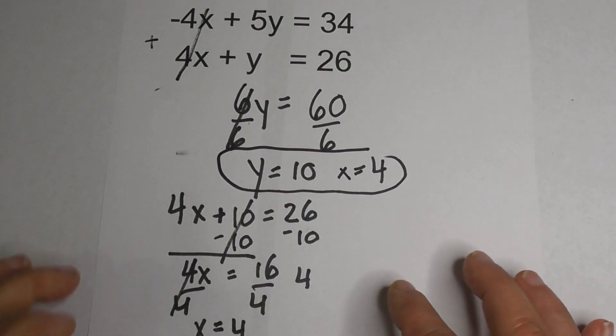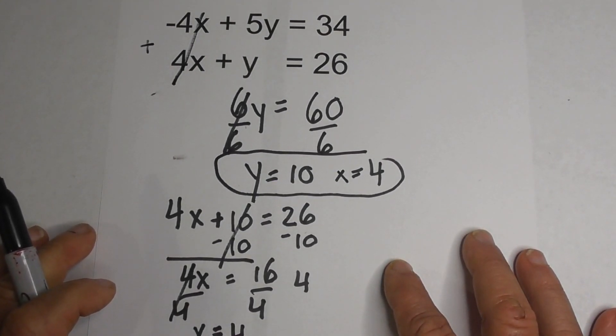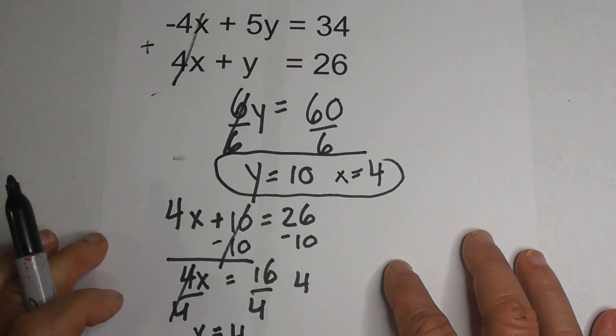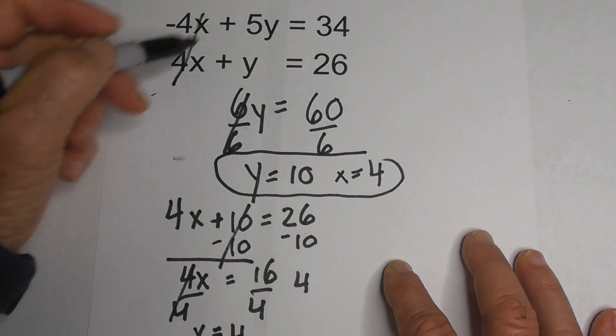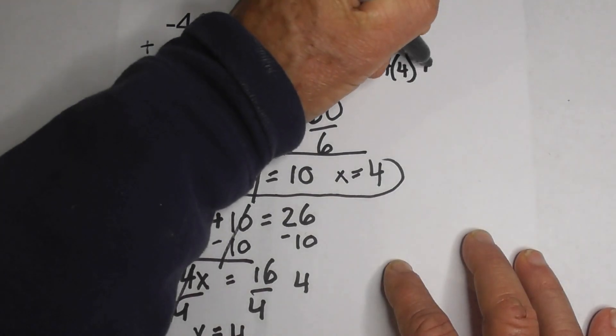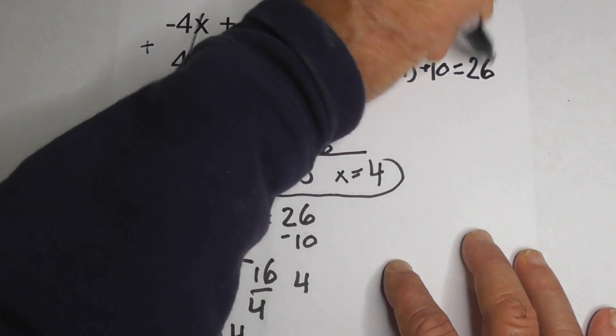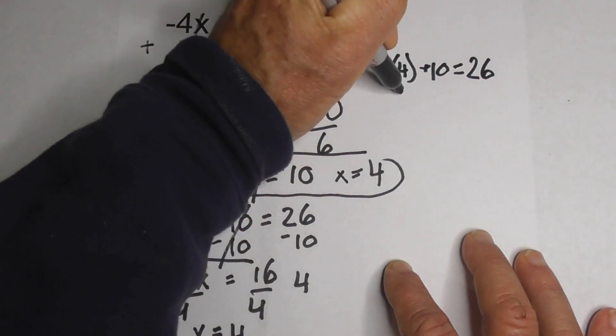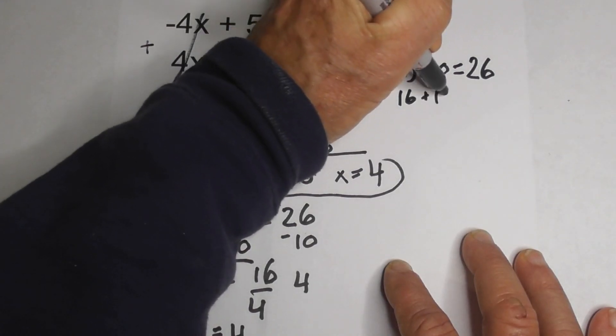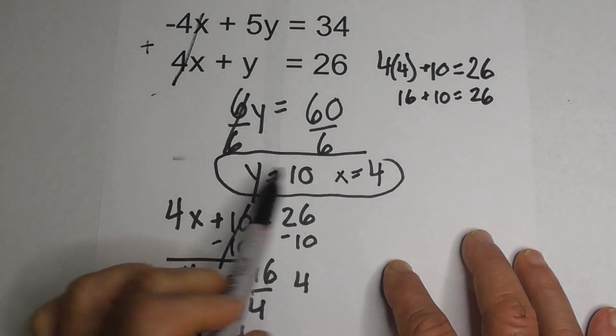Now what we can do is go ahead and plug this in to one of the equations and see if it adds up. So I'm going to go 4 times 4, 4 times 4, plus 10, and that should equal 26. 4 times 4 is 16, plus 10 does indeed equal 26. So I checked my work, so my two solutions are correct.